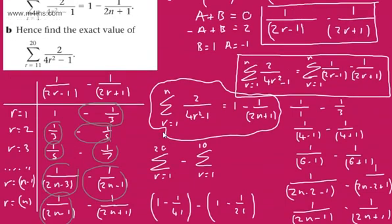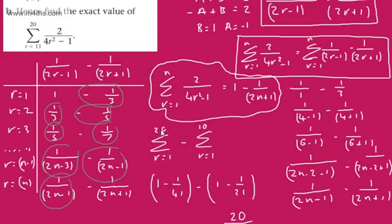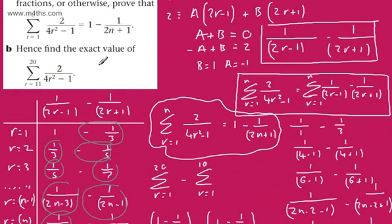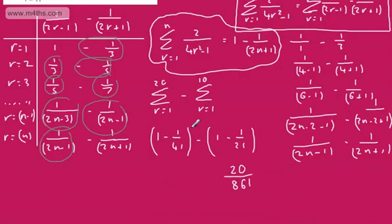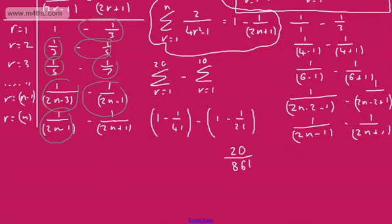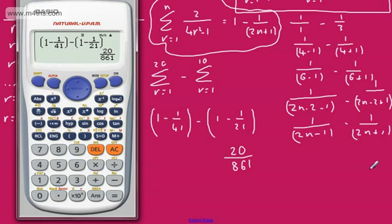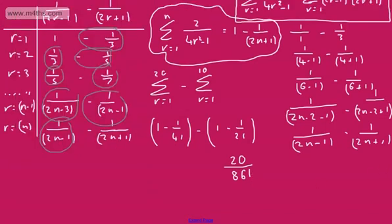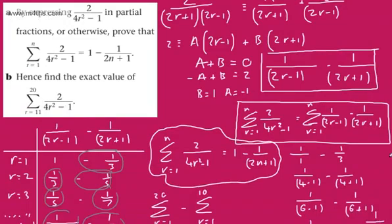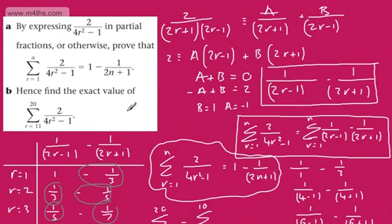We were asked for the exact value, so we give it as a fraction: 20 over 861. That's a lot nicer as a fraction. So there we go — using the method of differences and then evaluating a sum. Thank you.